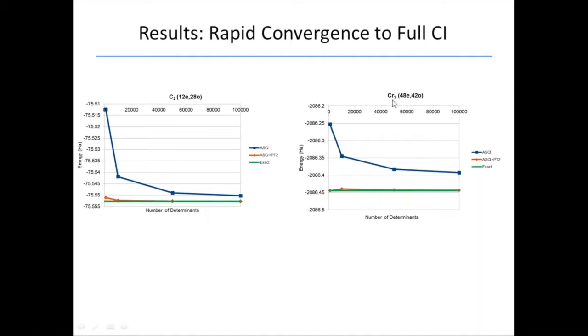We can go to an even bigger system. Here's chromium dimer with 48 electrons and 42 orbitals. That's full CI in the SVP basis set. And again, here's the ASCI wave function, here's with PT2, and here in green is the DMRG results. This has about 2.4 quadrillion determinants in its Hilbert space. But once you've got 50,000, you're within kcals of the absolute energy in this basis set.